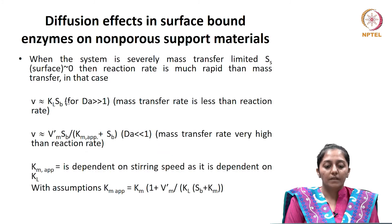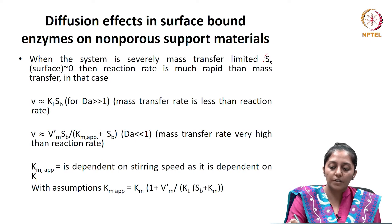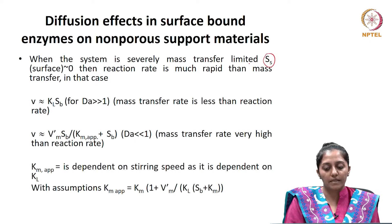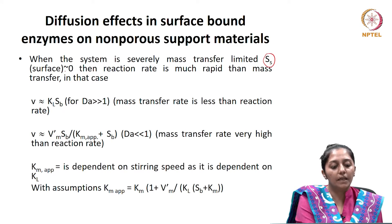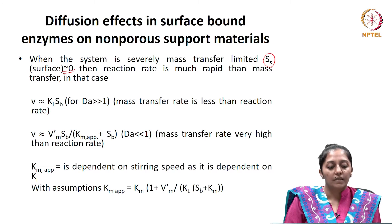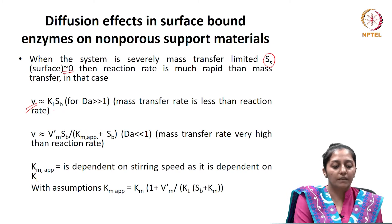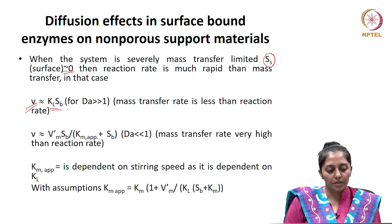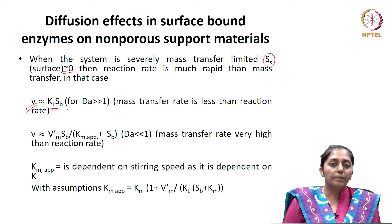When this system becomes diffusion limited — that is, severely mass transfer limited — the substrate concentration Ss at the surface where the enzyme is bound becomes nearly equal to zero. In this case, the reaction rate is much more rapid than mass transfer, so the reaction rate is governed by the mass transfer rate: k_m multiplied by the bulk substrate concentration. This corresponds to a very high Damköhler number.